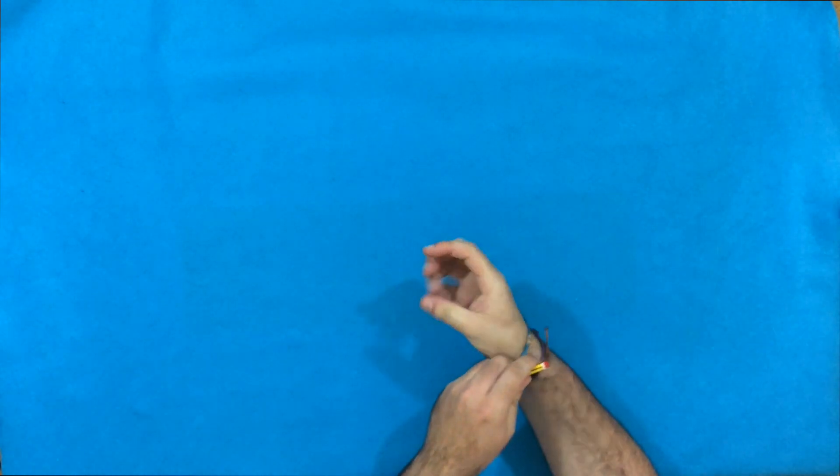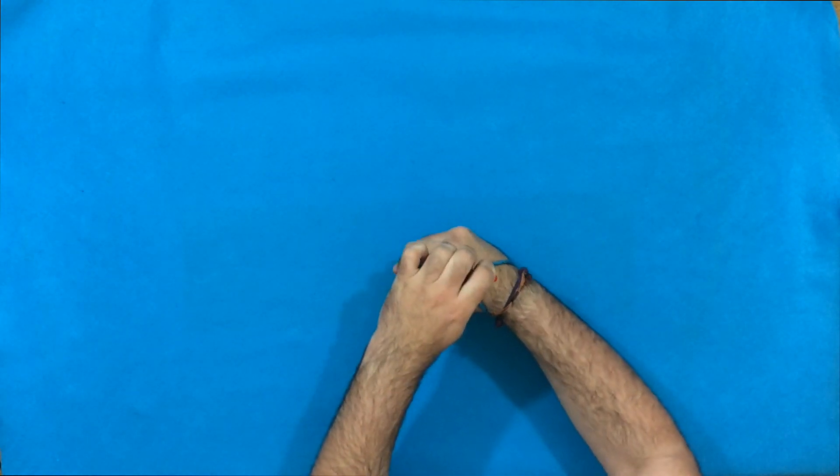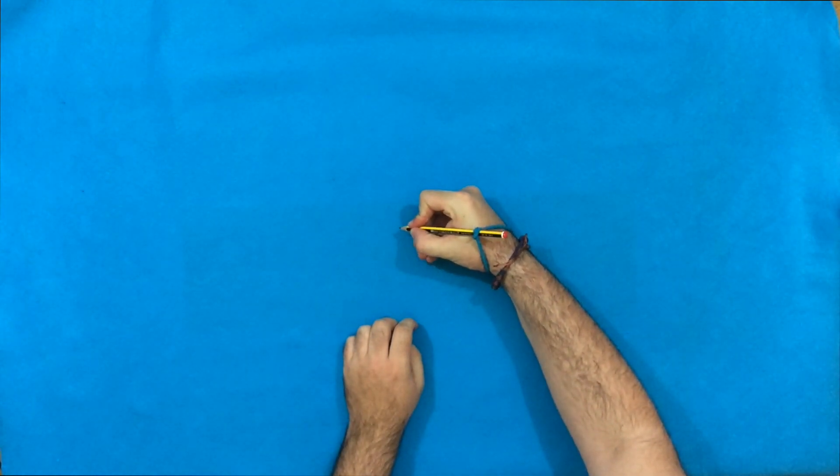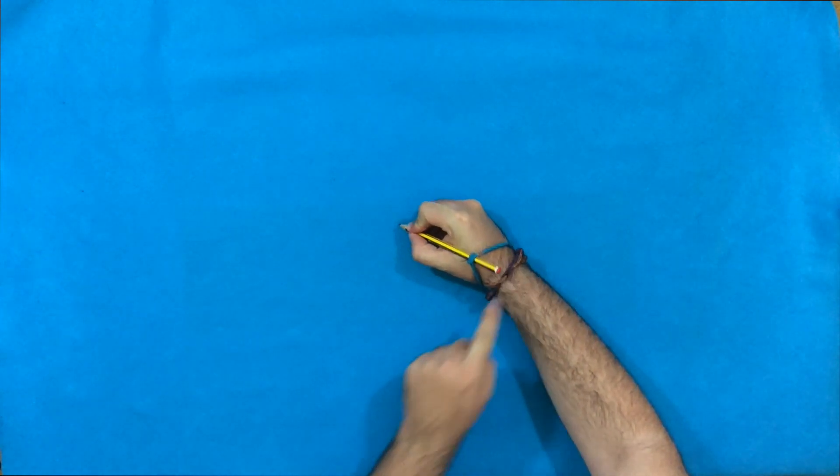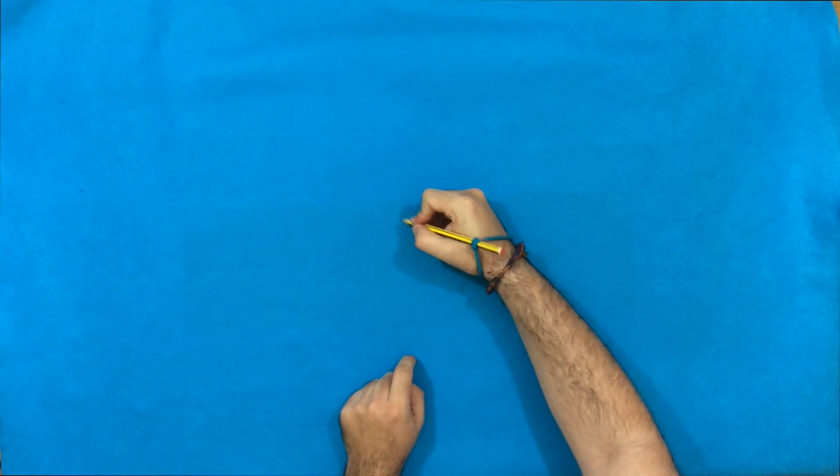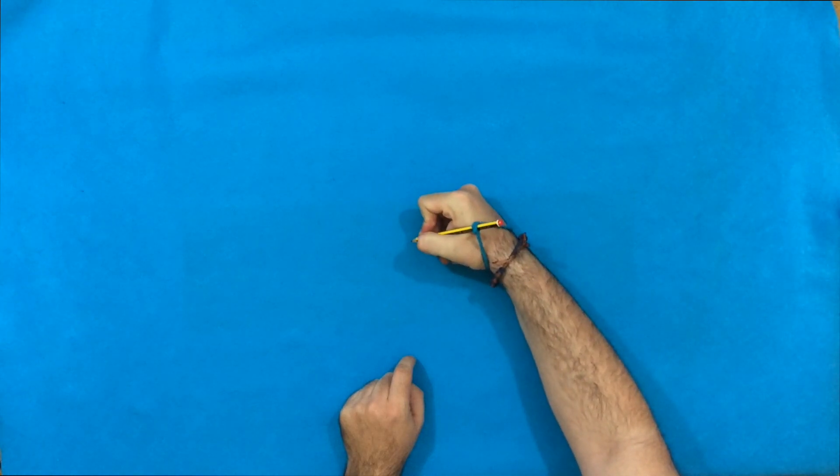Otra opción con la goma del pelo es esta otra posición que también os presento. Os recomiendo que para esta opción utilicéis una goma de las cajas de zapatos, una goma elástica que suelen ser mucho más amplias, más anchas y mucho más elásticas.